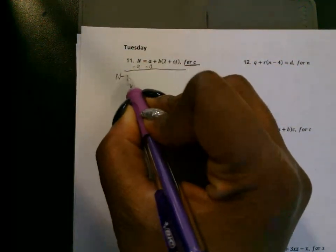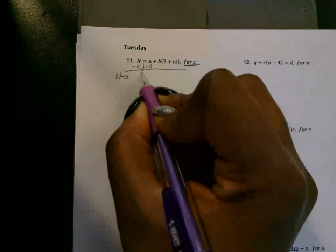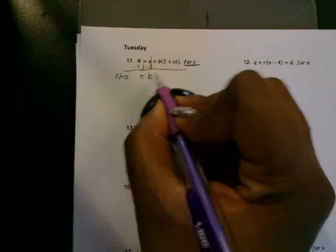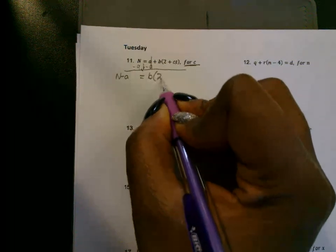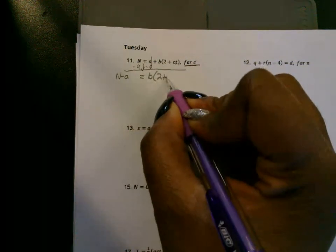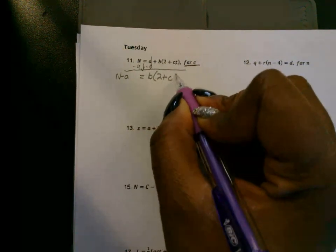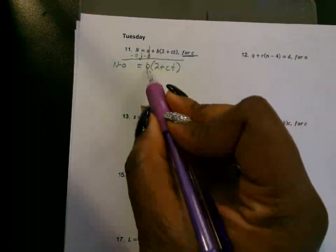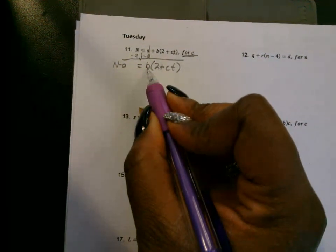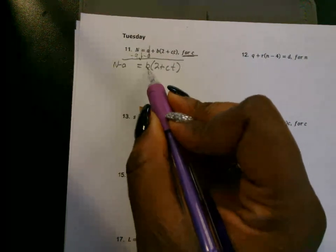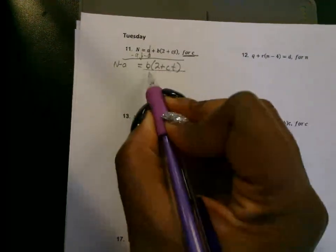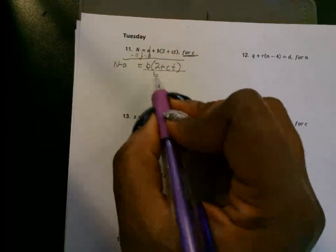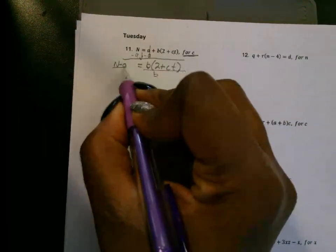On this side you get N minus A. Bring down the equal. This A is now gone and you're left with B parentheses 2 plus CT. So now we get rid of the B. The B — you get rid of it because it's being multiplied, so you're going to divide it. Don't distribute it because that's going to spread B out. To move B, you have to divide both sides by B.